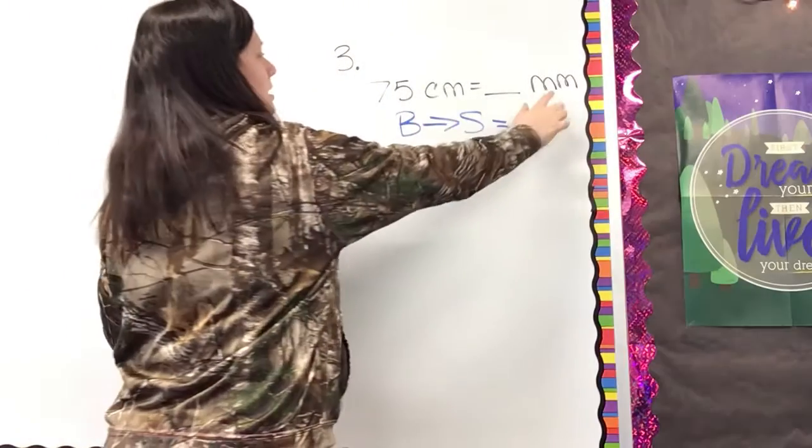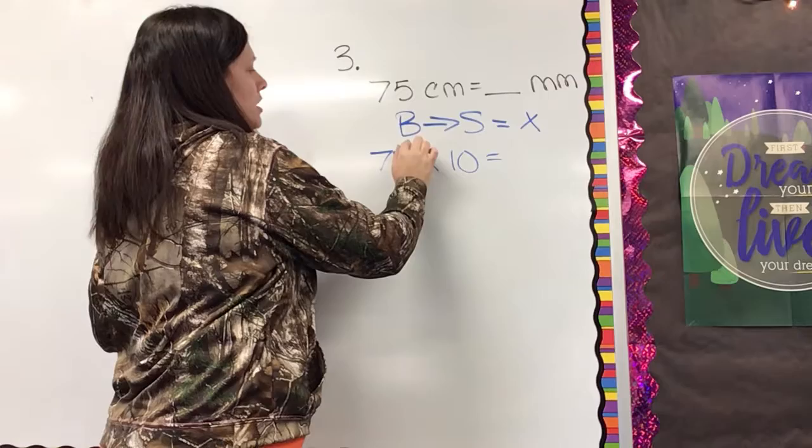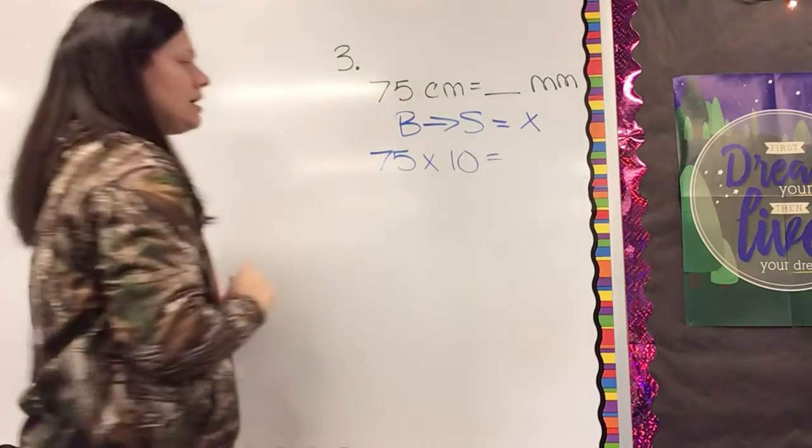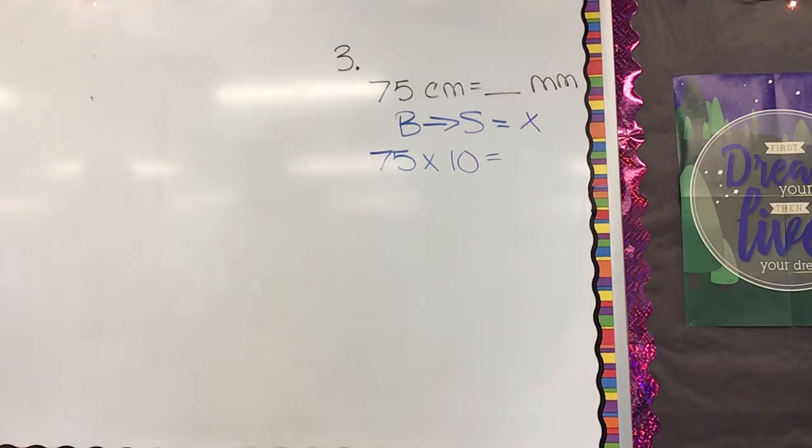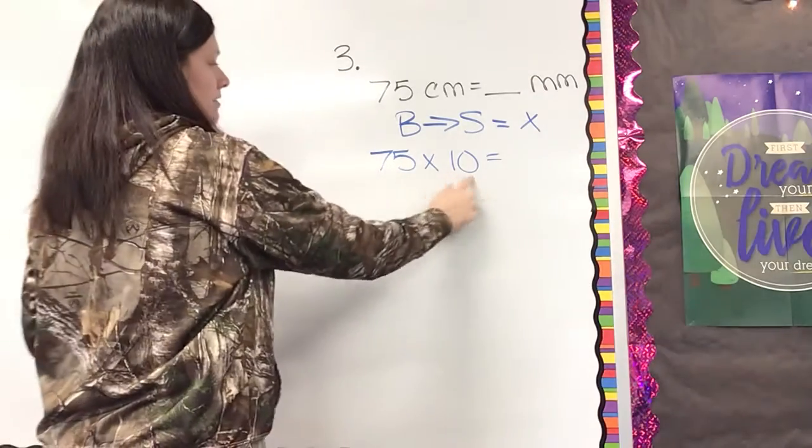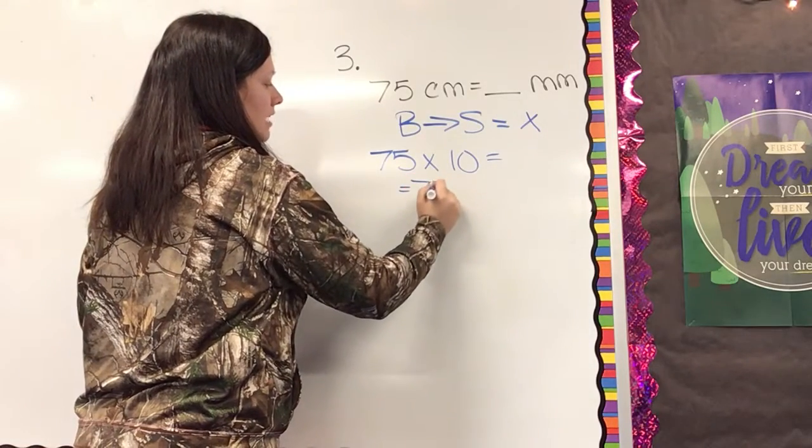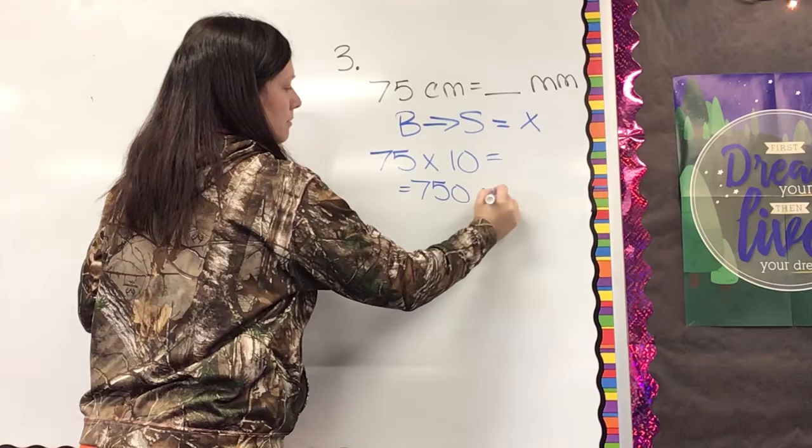When we're looking at centimeters to millimeters, I'm going from a bigger unit to a smaller unit, which means I'm multiplying. We know that there are 10 millimeters in a centimeter, so 75 times 10, mental math, that would give us 750 millimeters.